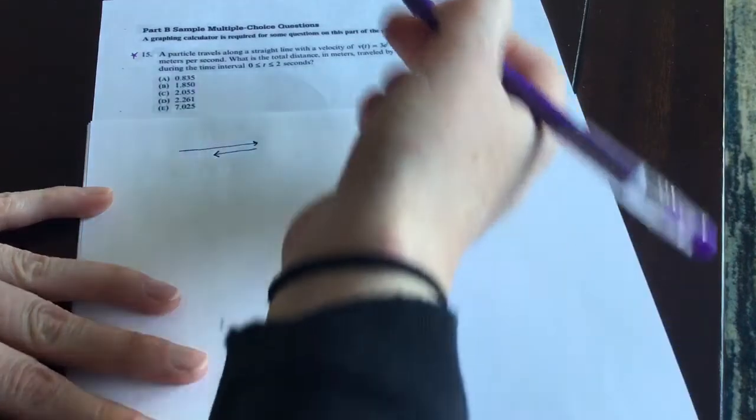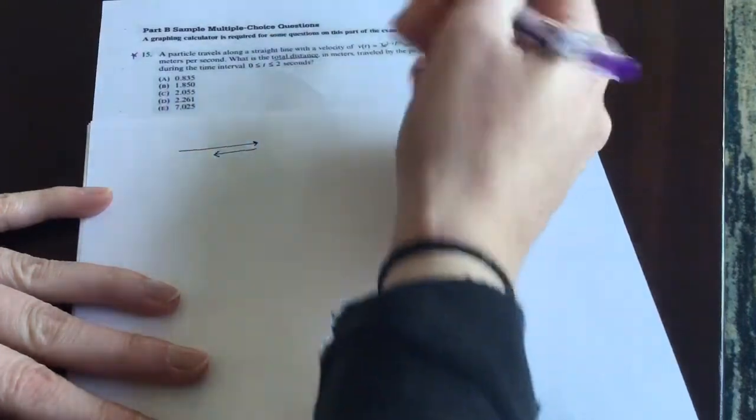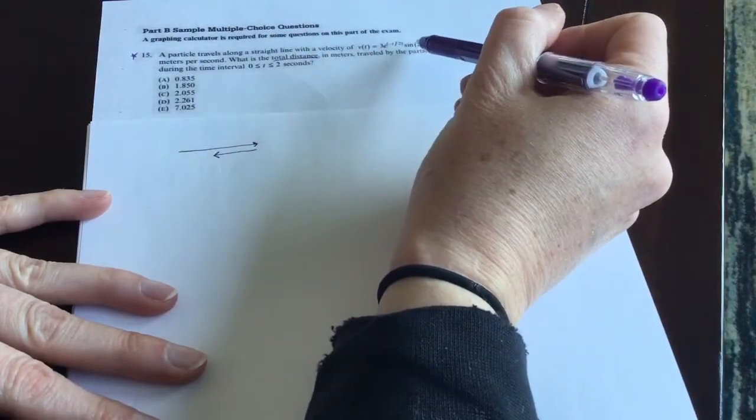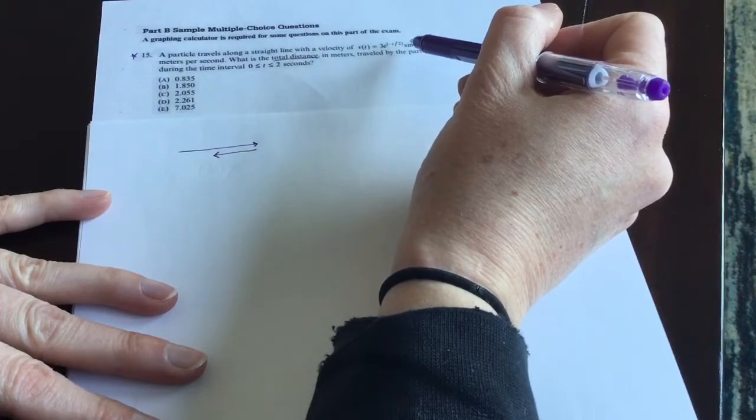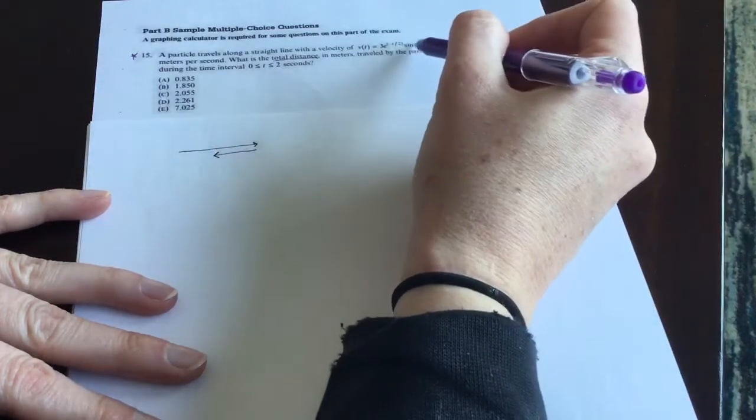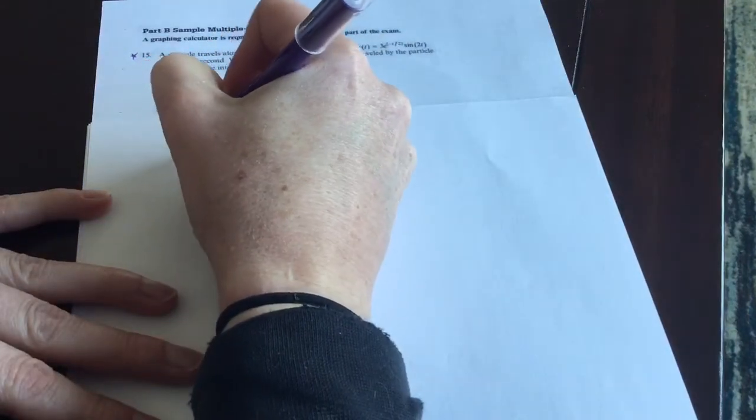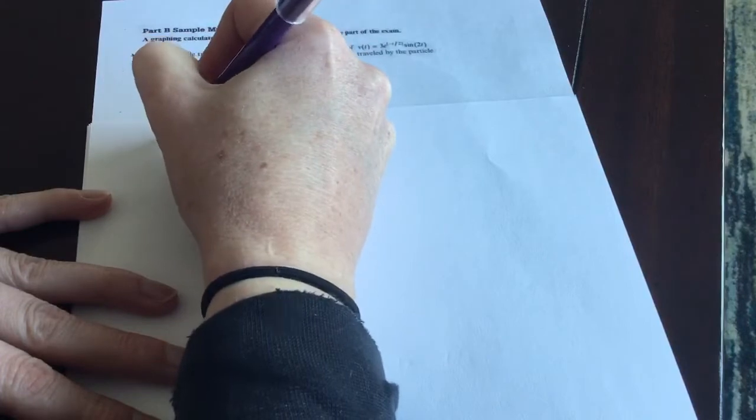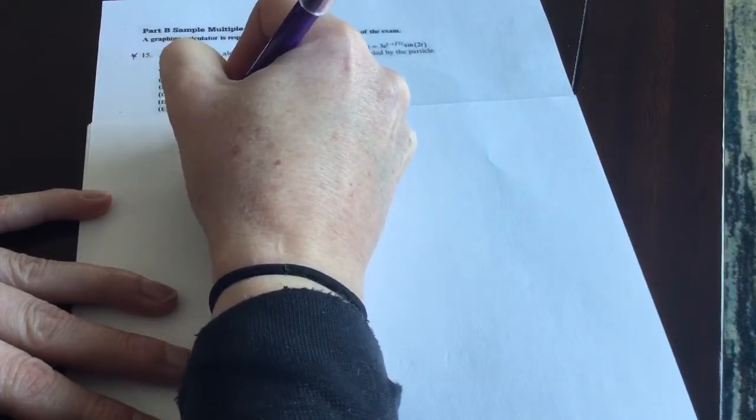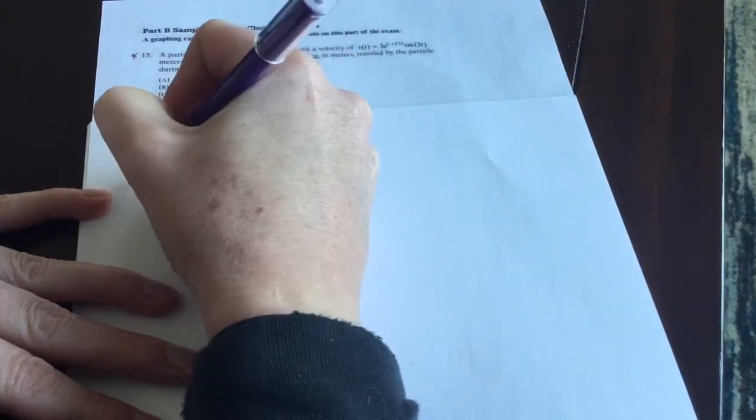But if velocity is negative, that means your particle is moving backwards. Because this is asking for total distance, and we'll show how you know, since the velocity is sometimes positive and sometimes negative, if you just do a straight up integral from 0 to 2 on this expression, then you're going to find what's called displacement. So if you did the integral from 0 to 2 of v(t) dt, then you would just find displacement.